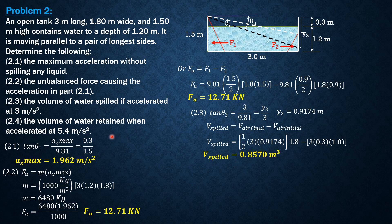Finally, for 2.4, the volume of water retained when accelerated at 5.4 meters per second squared. This time, 5.4 over 9.81 is greater than 1.5 over 3, so the resulting surface will cross the bottom.